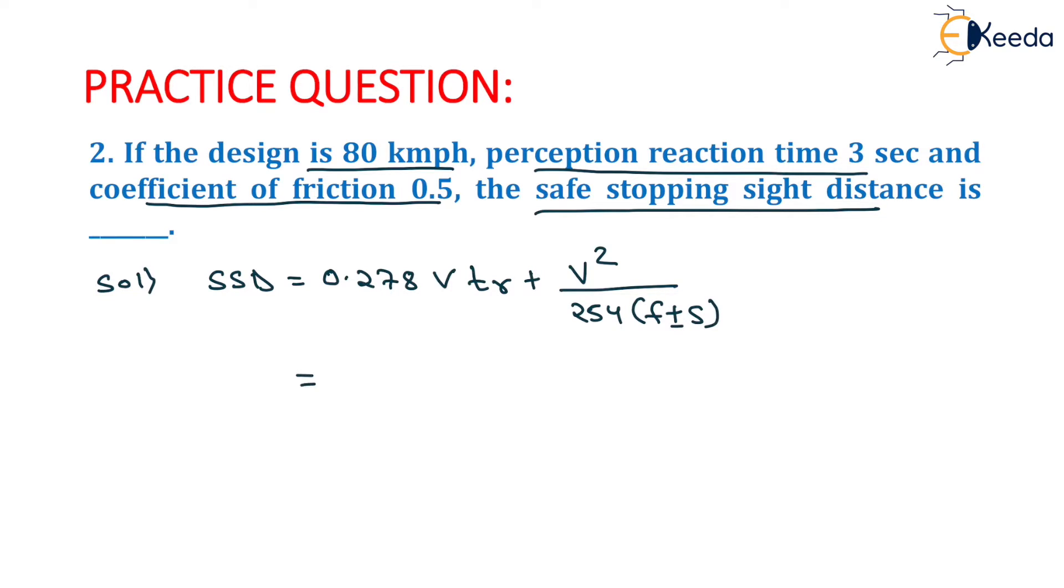Here the design speed is given as 80 km per hour, so we will put the value of V as 80 and perception reaction time is given as 3 seconds, so the value of TR will be 3.